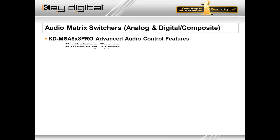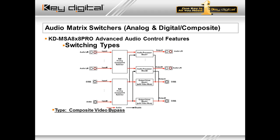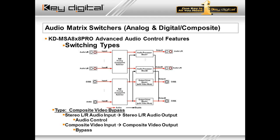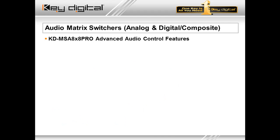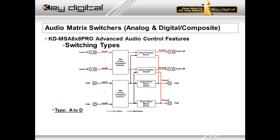The KD-MSA 8x8 Pro supports four main switching types. Type one is a simple bypass: stereo left and right analog audio in goes to stereo left and right analog audio out with audio control features. Every output has a single audio processor. PCM coaxial can be bypassed — meaning no volume control, delay, or EQ for the PCM signal — but this allows full support for multi-channel audio formats. Type two is a composite video bypass, where the PCM or composite video RCA receives special handling for the bandwidth and termination of a composite video signal rather than digital audio, with no manipulation performed on the composite video signal.